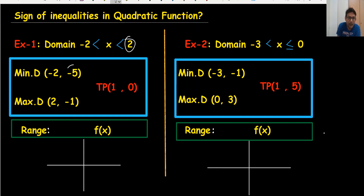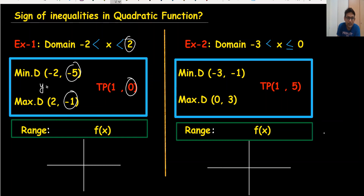The y values are minus five, minus one, and zero. So the minimum value of y is minus five, and the maximum value of y is zero. This means our range will definitely be between minus five and zero.